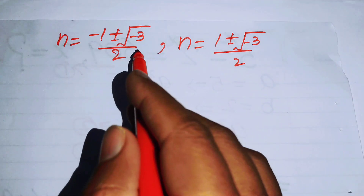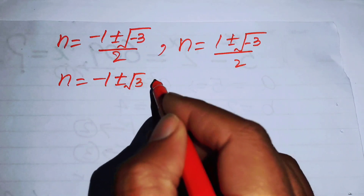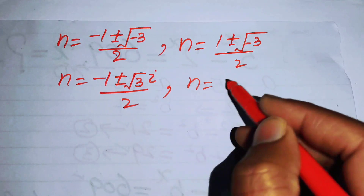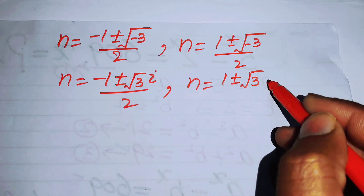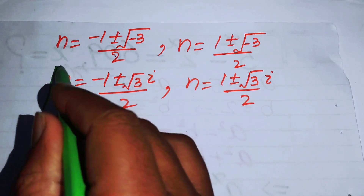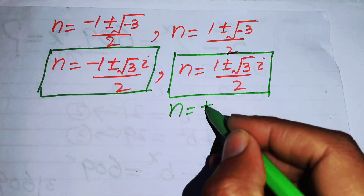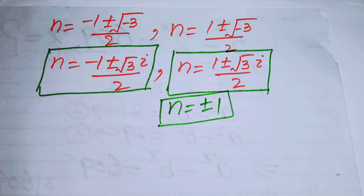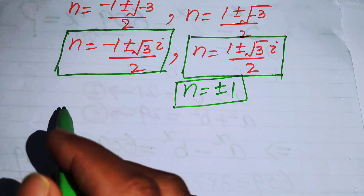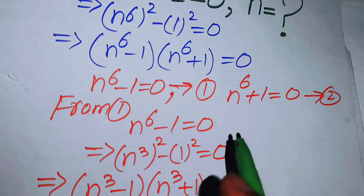The negative sign inside the square root gives us complex roots. The two real roots from equation 1 are n = ±1, and the remaining four roots from the quadratic equations are complex. We have found six roots from equation 1 and now move to equation number 2.